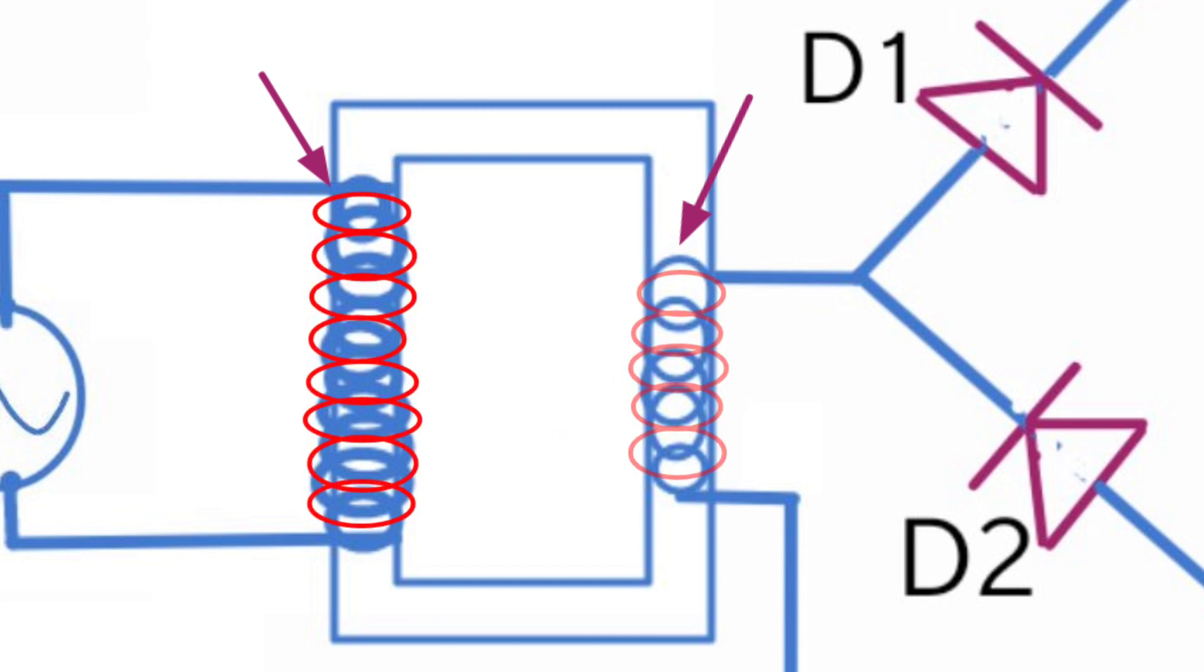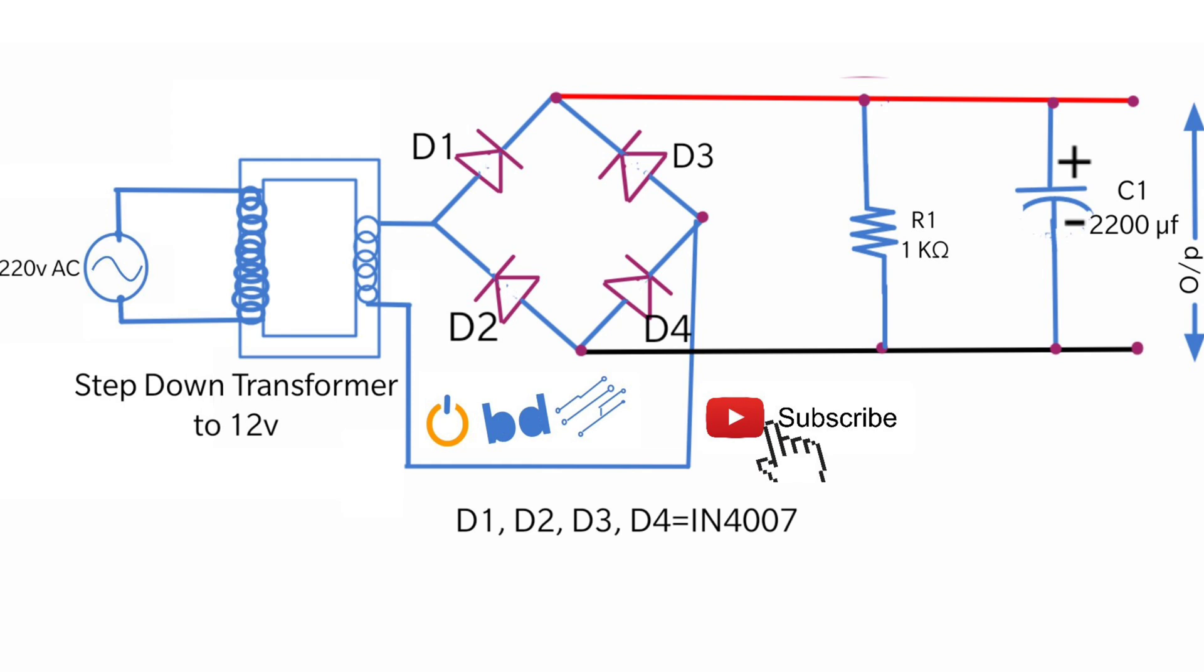In this way, the voltage is reduced from 220 volts to 12 volts. And this 12 volt supply passes through the bridge rectifier to convert the AC supply to DC supply.